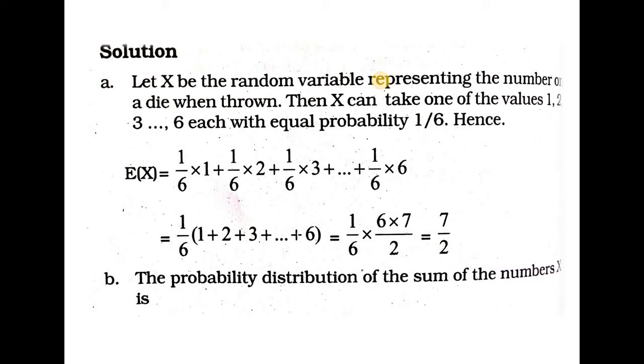The possible values on a die are 1, 2, 3, 4, 5, 6.